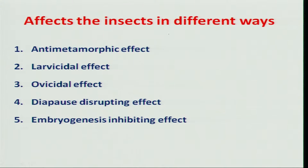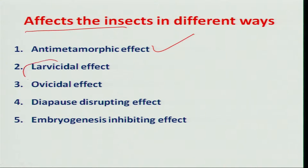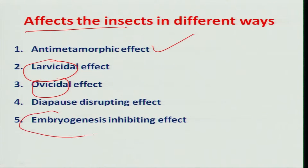These insect growth regulators affect insects in different ways. They act as anti-morphic chemicals and mainly act on larvae. They also act on eggs, and ultimately inhibit embryogenesis and egg hatching.